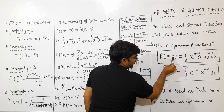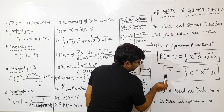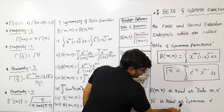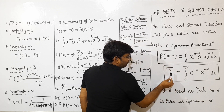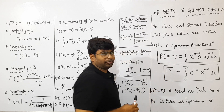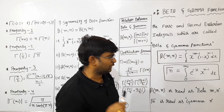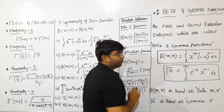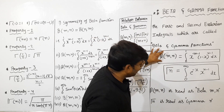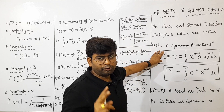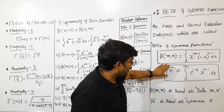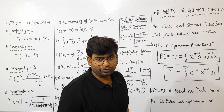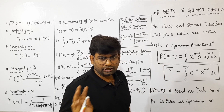That means, this is Beta(m,n) — a two-variable function. And this is Gamma(n) — a one-variable function. Gamma is a one-variable function; Beta is a two-variable function.